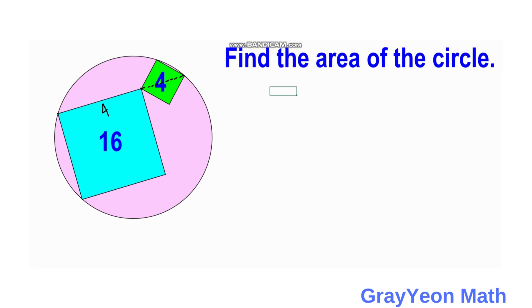The green square has an area of 4 square units, so its side is 2 units. The segment connecting the two squares' vertices is actually the diagonal of the green square, forming an isosceles right triangle. So this diagonal segment is equal to 2 square root of 2. We now have one chord which measures 4 plus 2 square root of 2.